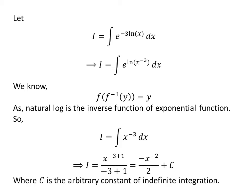This is a simple integration. The integration of x to the power minus 3 is x to the power minus 3 plus 1 upon minus 3 plus 1, which is equal to minus x to the power minus 2 upon 2.